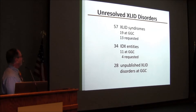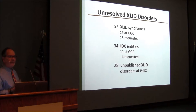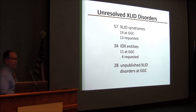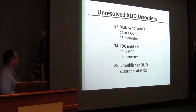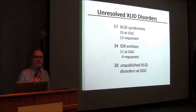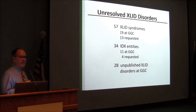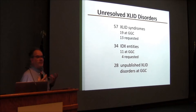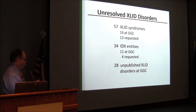There are 57 X-linked ID syndromes that do not have a gene associated with them; we have 19 here at the GGC and have requested another 13 from colleagues for analysis. There are 34 non-syndromic X-linked ID entities; we have 11 here and have requested another four. We also have 28 other families with good indication of X-linkage that we haven't published yet — some with good localization data, some without, because the family history may be informative but the number of samples available doesn't allow formal localization. We are looking to work with approximately 60 or so entities in total.